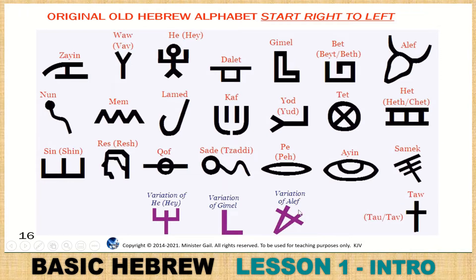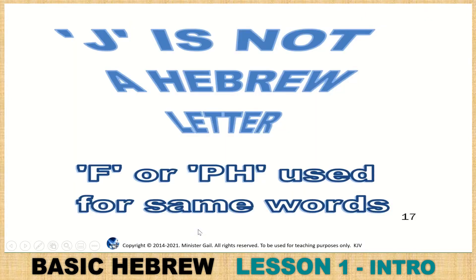Here is a variation of the Aleph, a variation of the Gimel, and a variation of He. J is not a Hebrew letter — it is never used in the Hebrew language; it was added later by the Roman Latin. F or PH is used for the same words — either way is correct, PH like in Phyllis, pronounced as an F or PH.